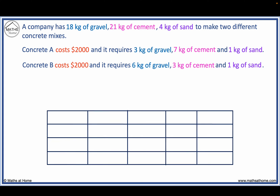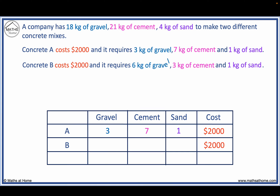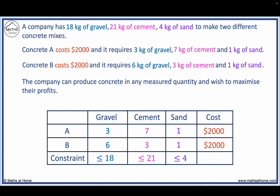This information can be summarised in a table. The constraints are given by the total amounts of each material available. There are only 18 kilograms of gravel, so we must use less than or equal to 18 kilograms of gravel. Similarly, we use less than or equal to 21 kilograms of cement and 4 kilograms of sand. The company can produce concrete in any measured quantity and wishes to maximise their profits.